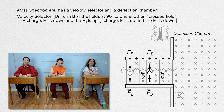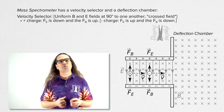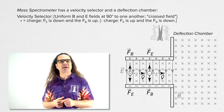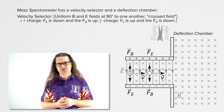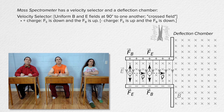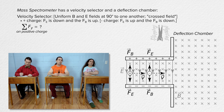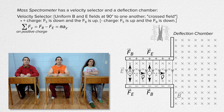Correct. Thank you both. Please sum the forces in the y-direction on the positive charge using Newton's second law. The net force in the y-direction equals, for the positive charge, the magnetic force minus the electric force. The net force equals mass times acceleration in the y-direction. We know the charge is moving horizontally, so the acceleration in the y-direction equals zero.